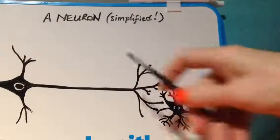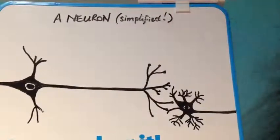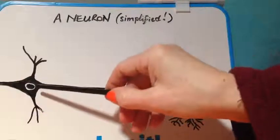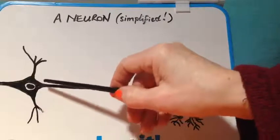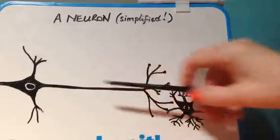Let's have a look at a simplified version of a neuron. This is the cell body called the soma, and that's the site of neurotransmitter production—as in your brain chemicals serotonin and dopamine—which are involved in transmitting messages between nerve cells.